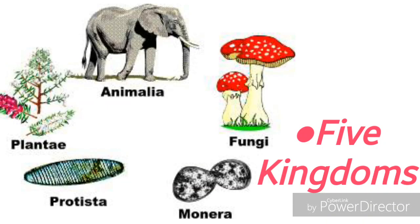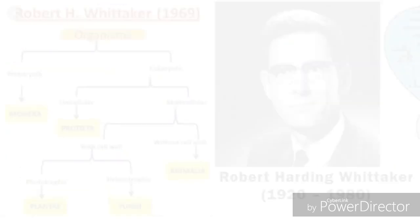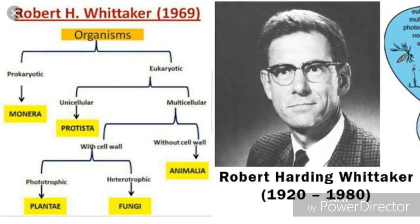In the Five Kingdom classification proposed by Robert Whittaker, the first kingdom is Monera, the second is Protista, the third is Fungi, the fourth is Plantae, and the fifth is Animalia. In this picture you can see the great taxonomist Robert Whittaker and the flowchart of the Five Kingdom classification.